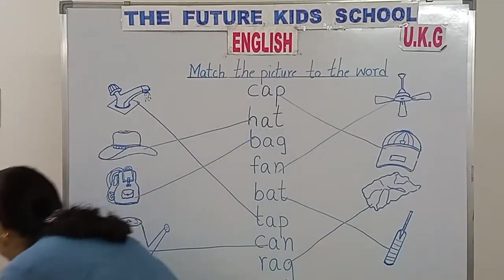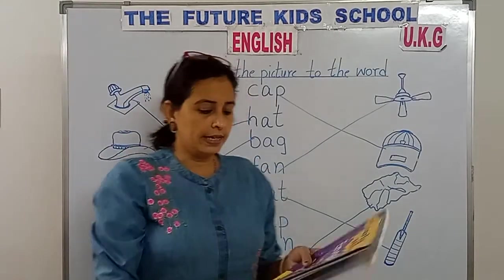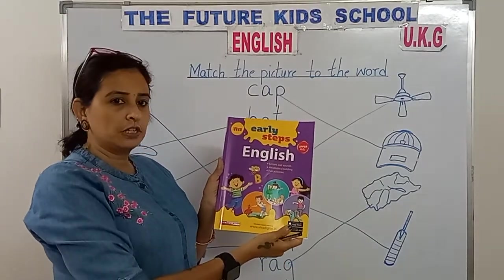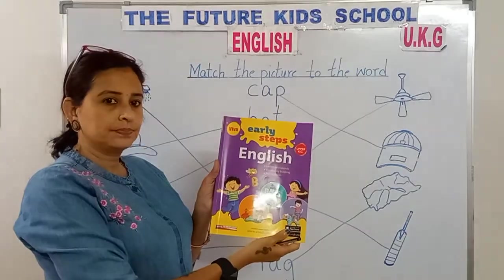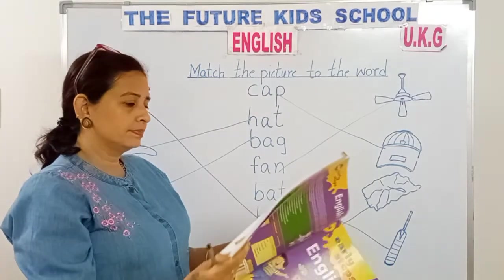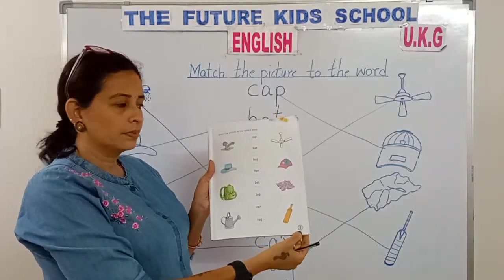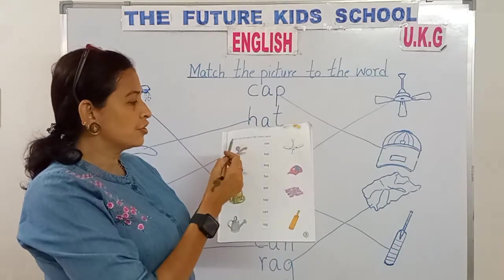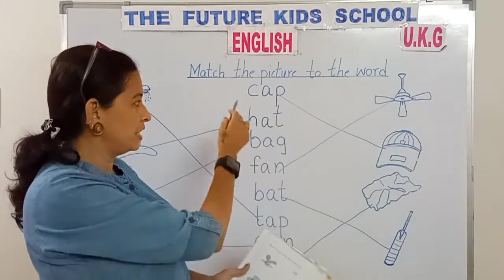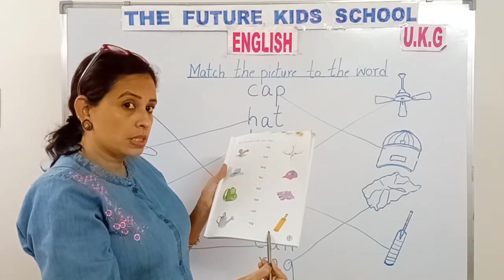And children, now take out your English book. Page number seven. Match the picture to the correct word — the same thing we have done on the board children. Do it in your books.